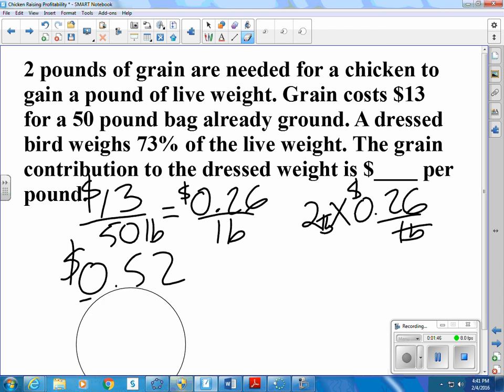52 cents for a pound. It takes 52 cents for 2 pounds of grain, which makes the live bird a pound heavier. But only 73% of that will be the dressed weight after the bird is ready to cook as a whole chicken. So, we could say 0.73 times 1 pound. Well, that equals 0.73 pounds.